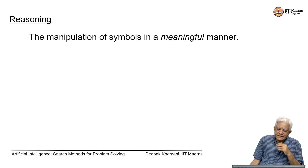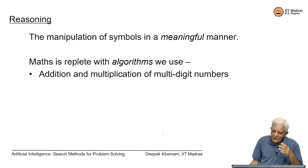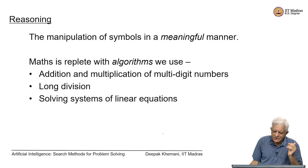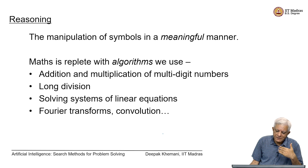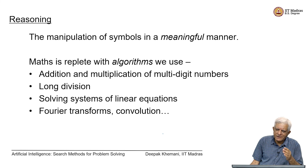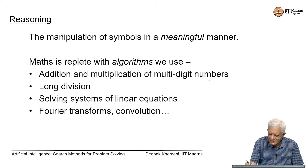By reasoning, we mean formal methods — manipulation of symbols in a meaningful manner. We are familiar with these kinds of algorithms: addition and multiplication of multi-digit numbers. Many children learn to multiply 5- or 10-digit numbers and have a whole process for doing it, but not everybody conceptualizes what is really happening. For example, when multiplying 3974 by 29, we multiply by 9 first, then when we multiply by 2 we shift one position to the left.